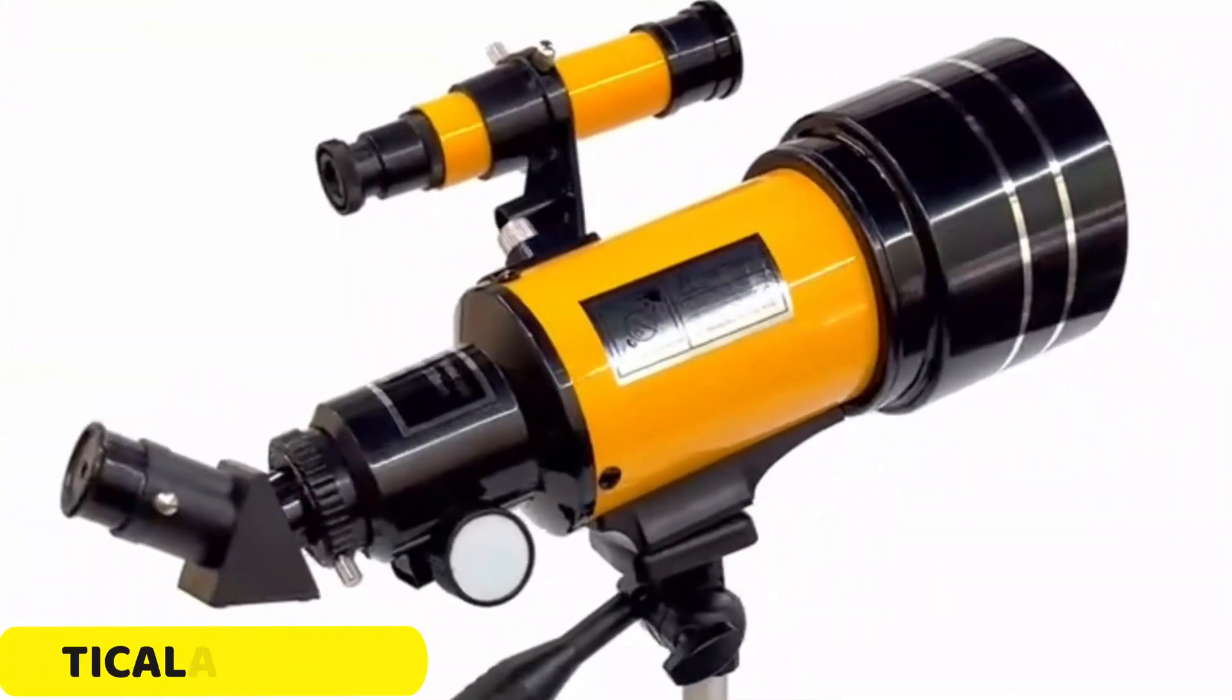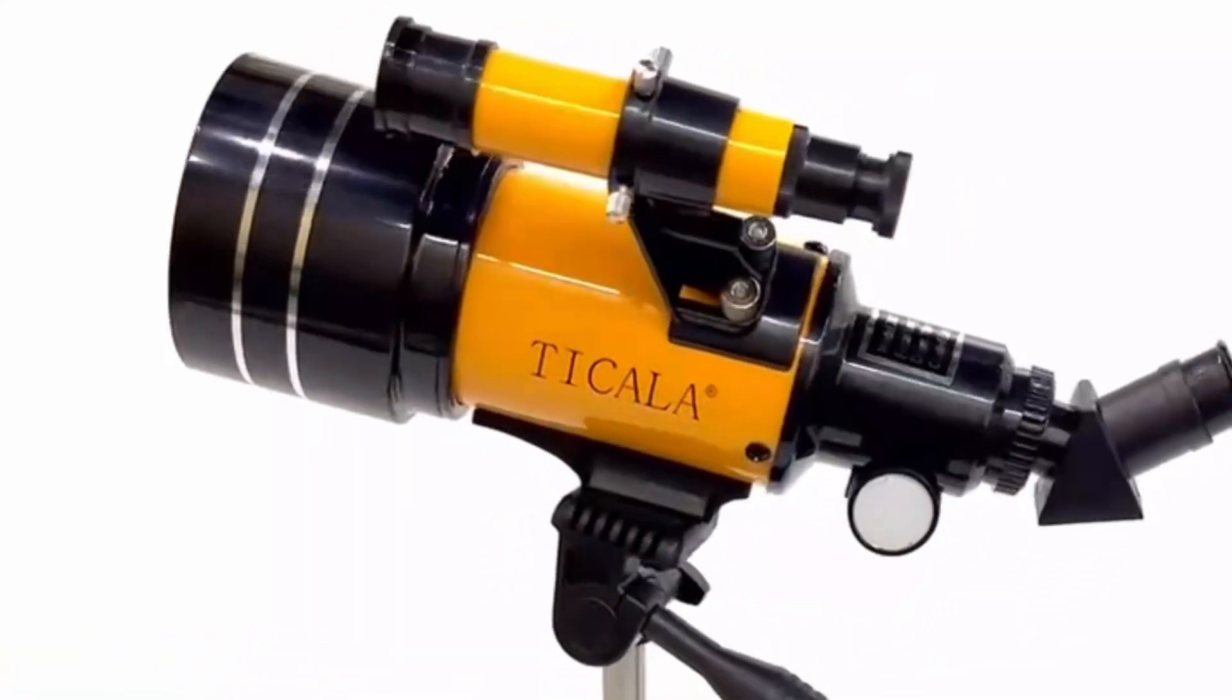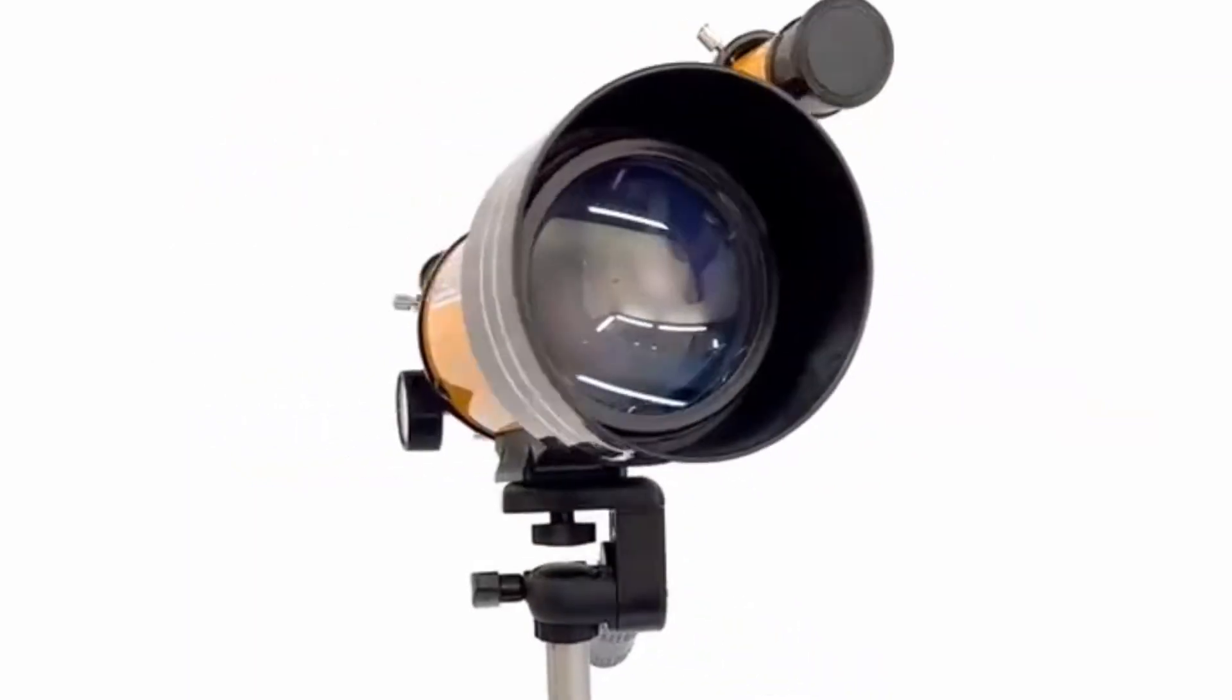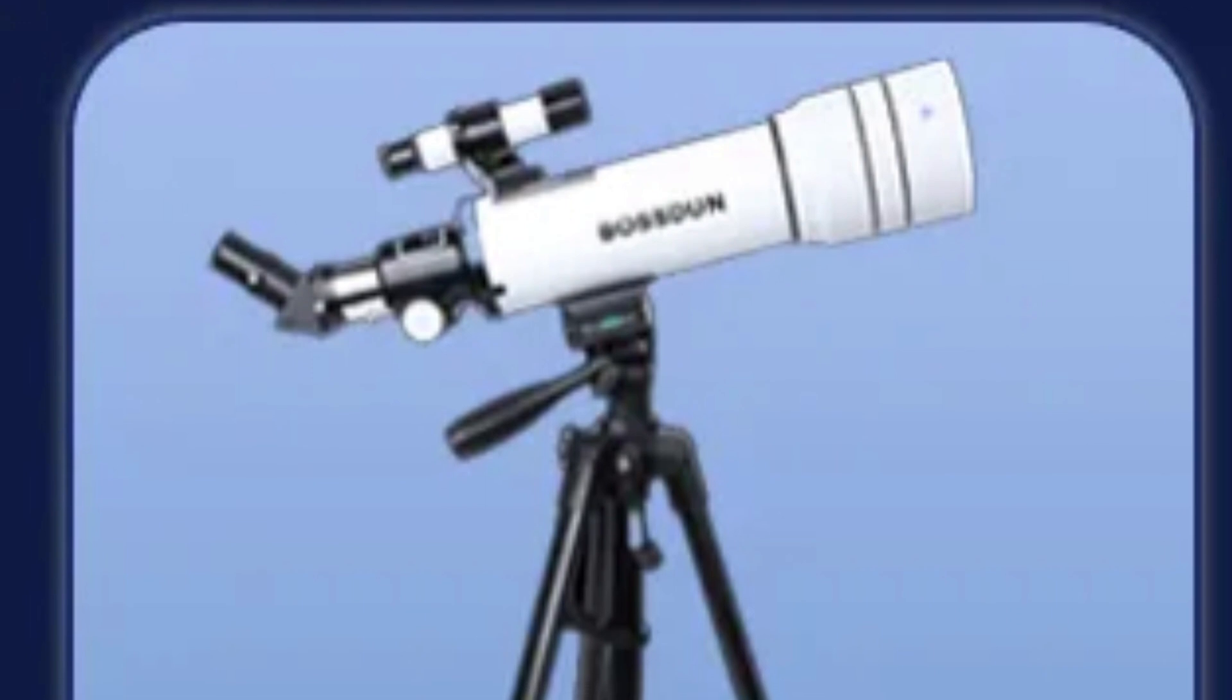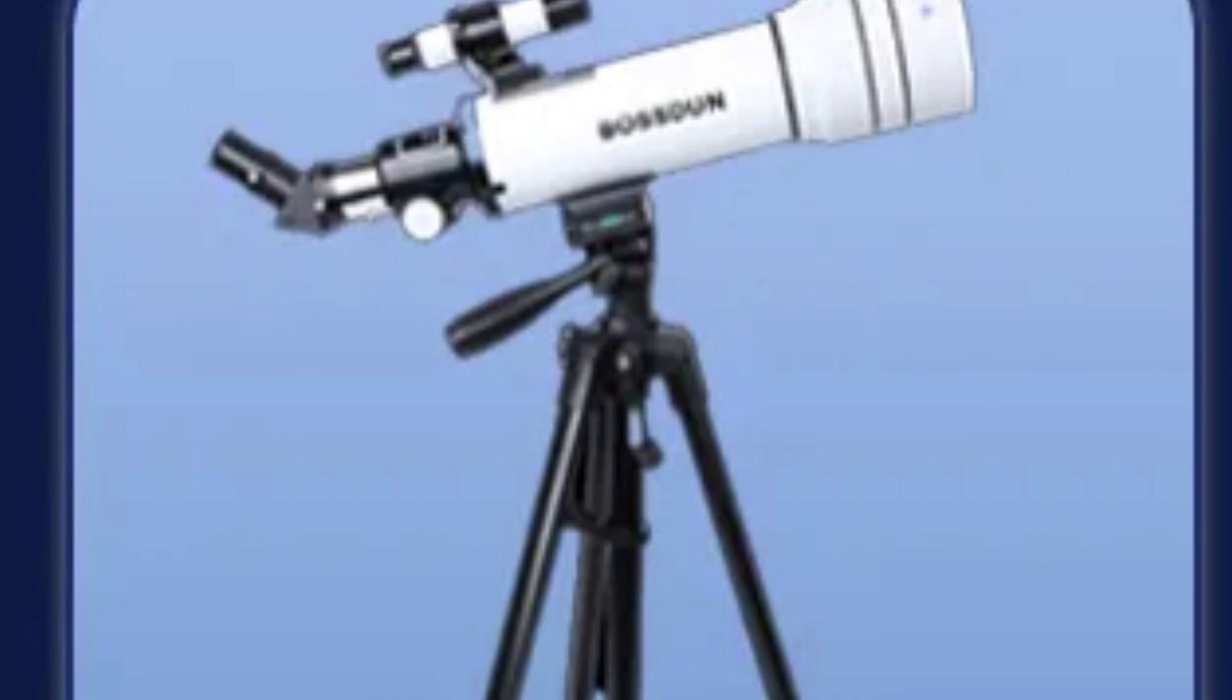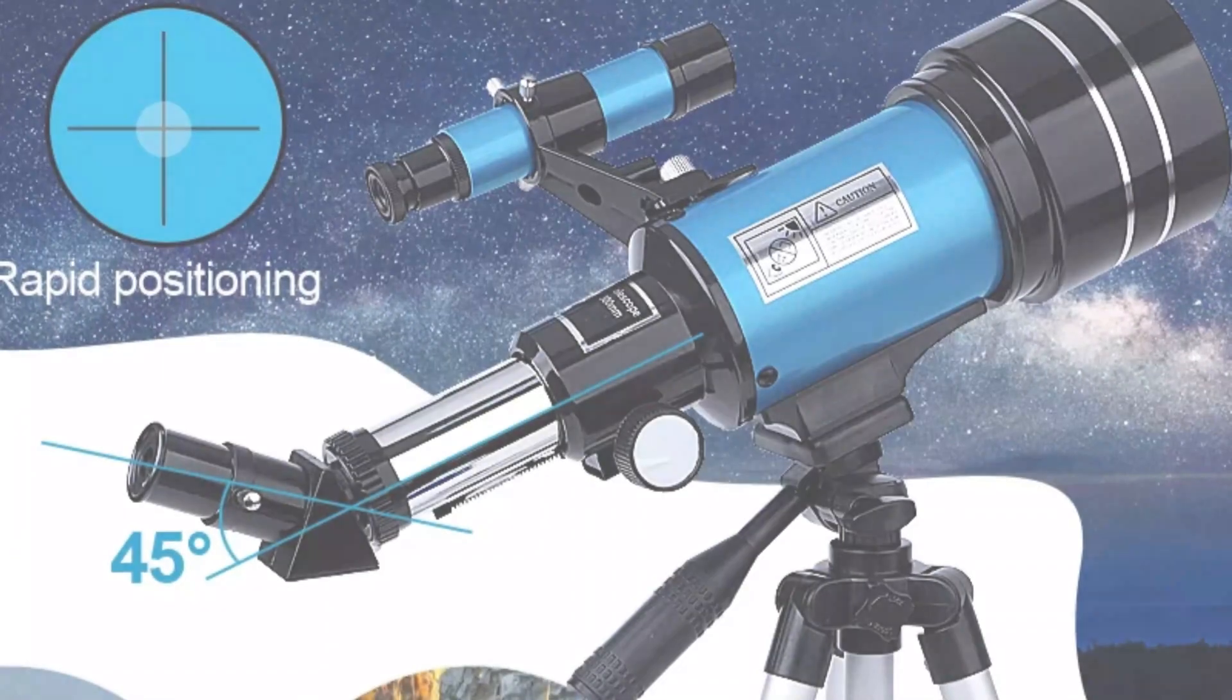Number 2. Ticala 30,070 Astronomical Telescope. The Ticala 30,070 Astronomical Telescope is a versatile and user-friendly telescope suitable for both beginners and amateur astronomers. Its refractor optical design ensures clear images of celestial objects with a 70mm aperture providing detailed views of the night sky.